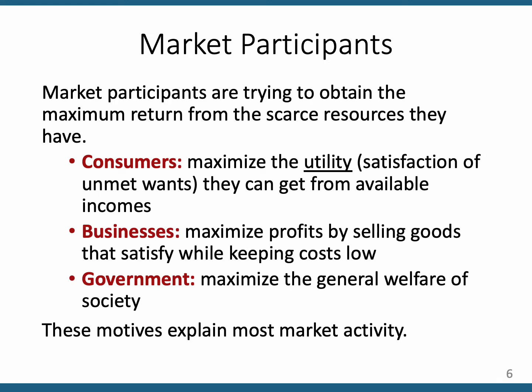Now we're going to start talking about what's called the circular flow diagram. The circular flow model is a model of the whole economy. There are three types of market participants in this model. Thinking of a national economy: there are consumers, who are interested in maximizing the utility they get from the goods and services they purchase with their income. Businesses, whose objective is always to maximize profits by selling the goods and services they produce while keeping their costs low. And then the government plays a role too.